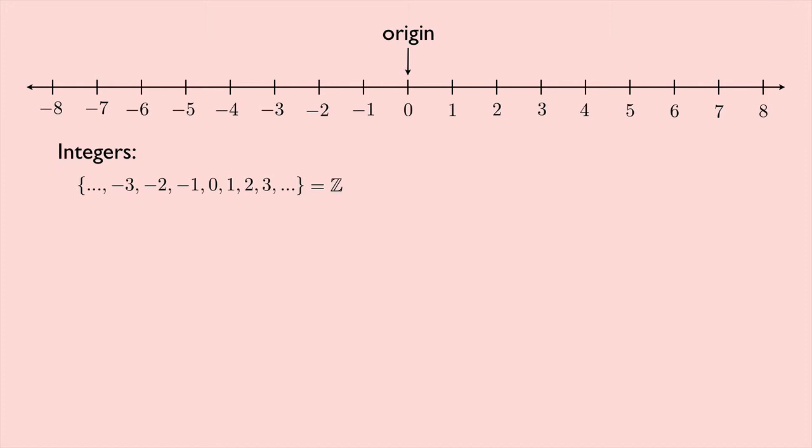Now in the integers, there are subsets of the integers. That means that they're just part of the integers. For example, whole numbers. Whole numbers are 0, 1, 2, 3, and they keep going, dot dot dot.